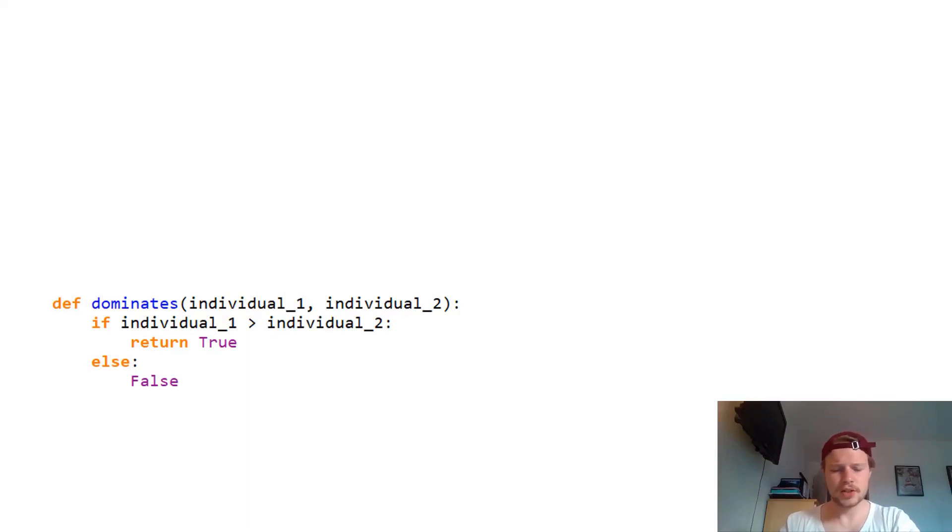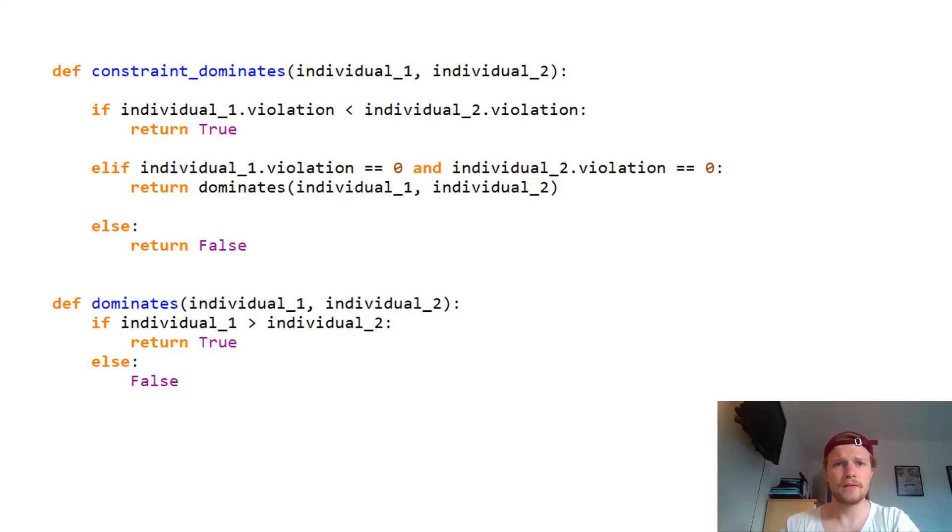And constraint satisfaction is easily integrated by just wrapping this domination check into another check where it is first checked with both individuals if one individual satisfies more constraints than the other one. So it means if one individual, for example, this here individual one, is violating less constraints, it is dominating individual two even if the performance of individual two is better than the performance of individual one. So if we have a rank, the constraint satisfaction is here and only if the constraint satisfaction is equal, like you can see in the next line or is zero for both, then it is checked which one has a better performance. So first constraint satisfaction counter is compared and then the performance is compared.